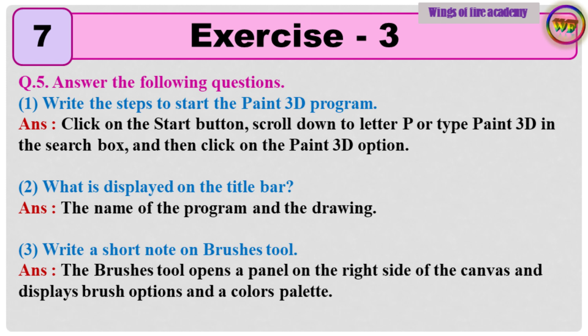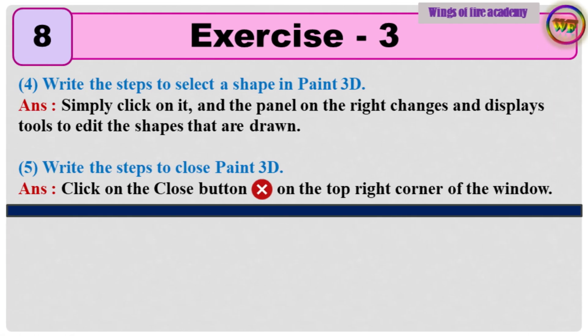Question 3: Write a short note on Brushes tool. Answer: The Brushes tool opens a panel on the right side of the canvas and displays brush options and a colors palette. Question 4: Write the steps to select a shape in Paint 3D. Answer: Simply click on it, and the panel on the right changes and displays tools to edit the shapes that are drawn.